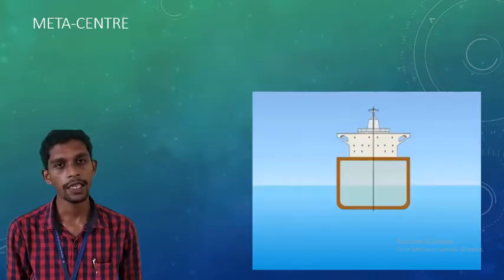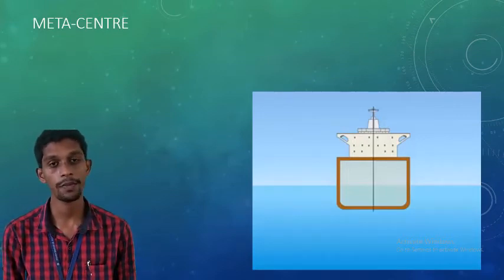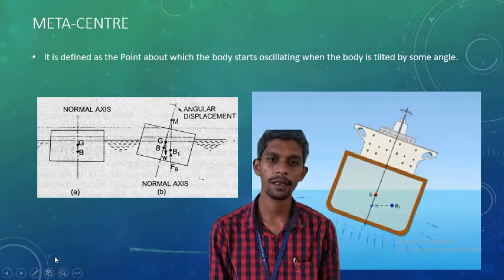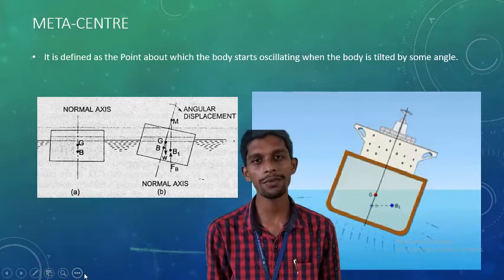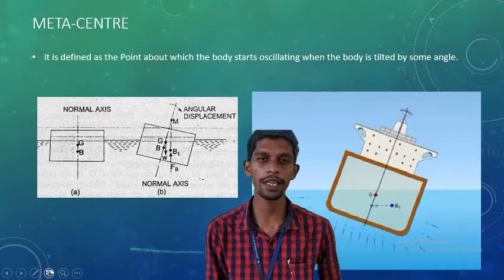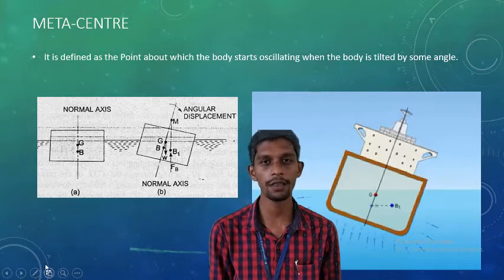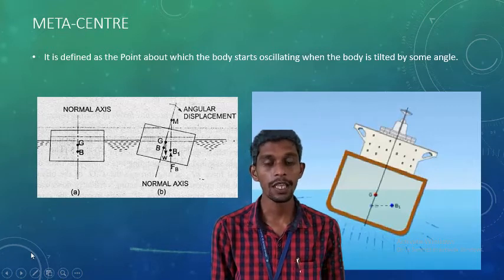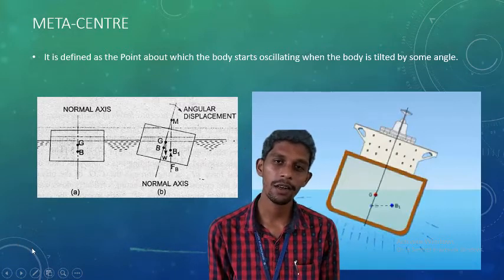The next important concept is the metacenter, which is very important for objects like ships. Metacenter is defined as the point about which the body starts oscillating when tilted by some angle. Objects like ships, due to the effect of waves in seas or oceans, are oscillating in nature — oscillating clockwise or anticlockwise. The point about which the body concentrates its oscillation is called the metacenter.